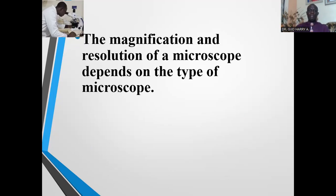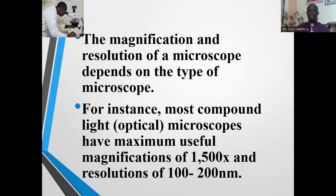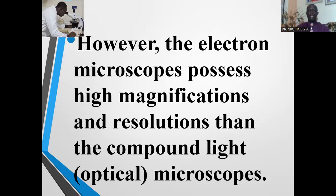Magnification and resolution of a microscope depends on the type of microscope. For instance, most compound or optical microscopes have a maximum useful magnification of times 1500 and resolutions of 100 to 200 nanometers. The electron microscope has higher magnification and resolution than the compound light or optical microscope.